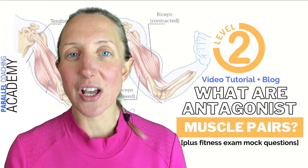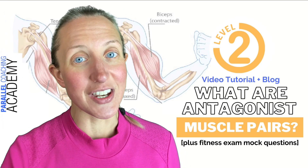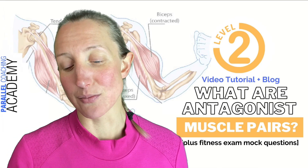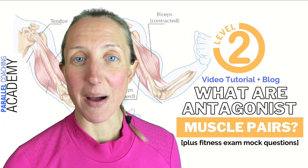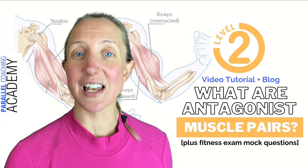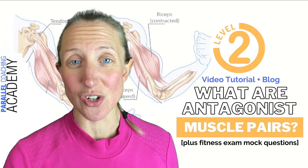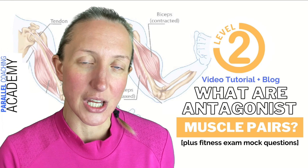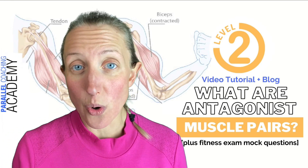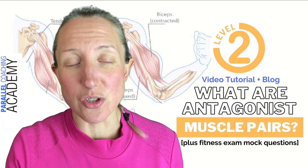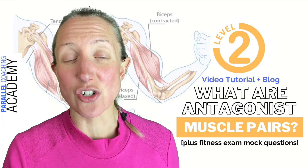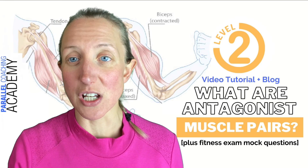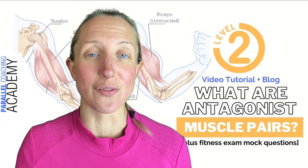Now let's look at the equivalent pairing over the knee. We have the hamstrings — three muscles on the back of the leg — which contribute to knee flexion, like a leg curl machine. Then we have the quadriceps, the opposing muscle, which work with knee extension. They are opposing, just like the pairing at the hinge joint of the elbow.